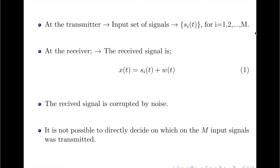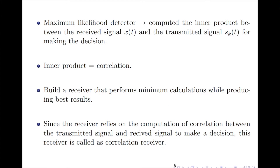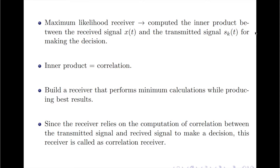This becomes the objective behind constructing a receiver. Let us now talk about the correlation receiver. In my previous video, I discussed the maximum likelihood detector. There, we computed the inner product between the received signal X of t and the transmitted signal S_k of t for making the decision. This inner product is the correlation between X of t and S_k of t. We wish to build a receiver that performs minimum calculations while producing the best results. Since the receiver relies on computing this correlation to make a decision, it is called the correlation receiver.